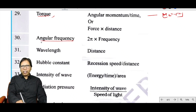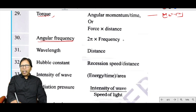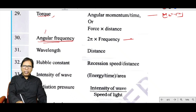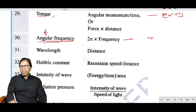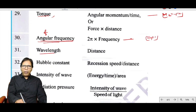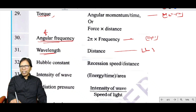Angular frequency has the same dimension as frequency and angular velocity: T⁻¹. Wavelength is a distance, so its dimension is L.